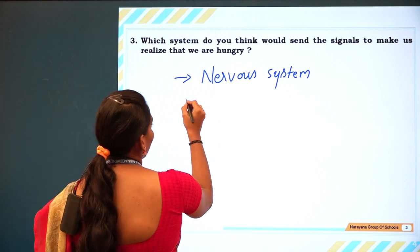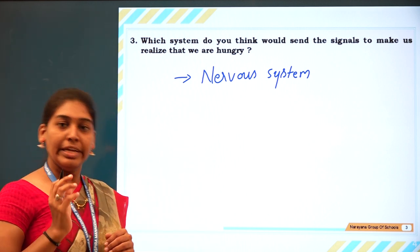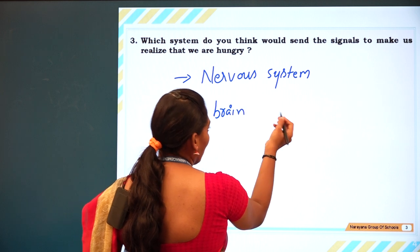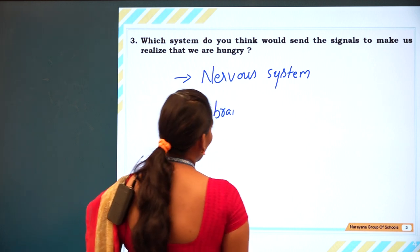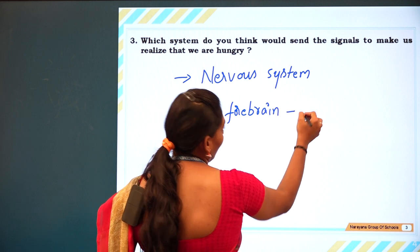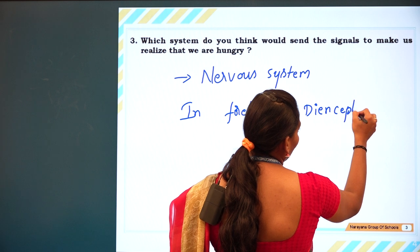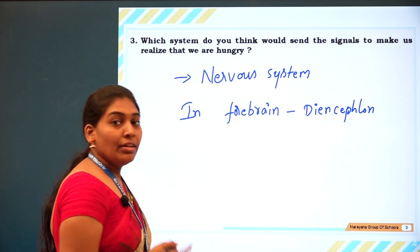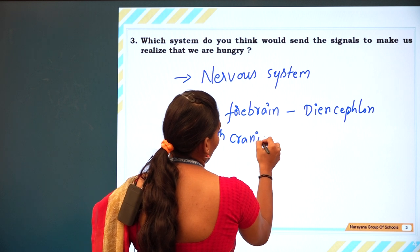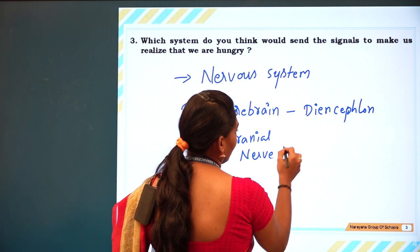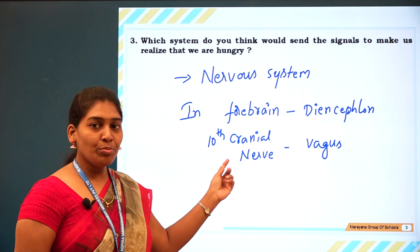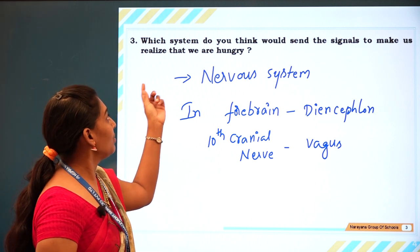In the nervous system, the brain and spinal cord make up the central nervous system. In the brain, there are three parts. One region is the diencephalon. There is also the 10th cranial nerve, called the vagus nerve, which is also responsible for sending signals to make us realize that we are hungry.